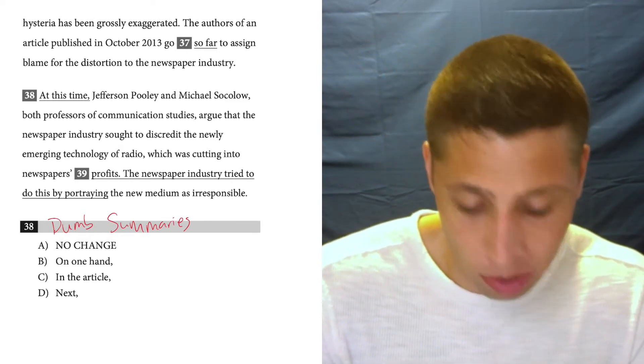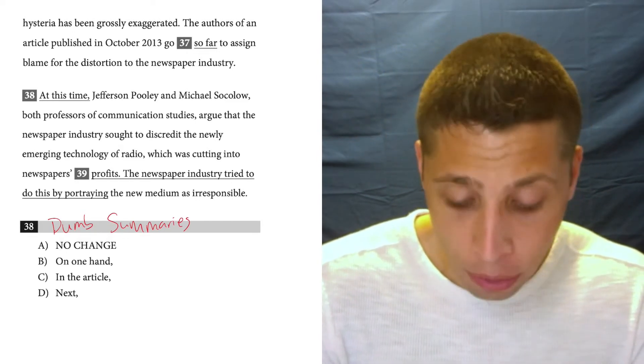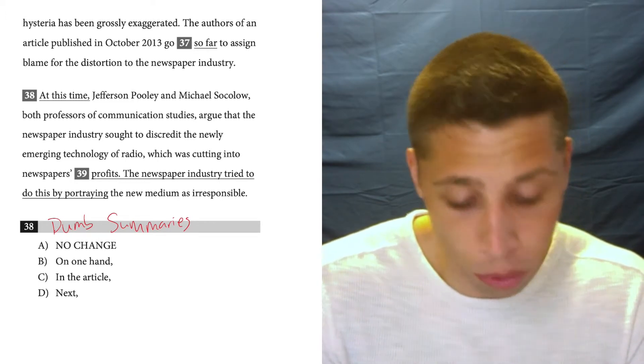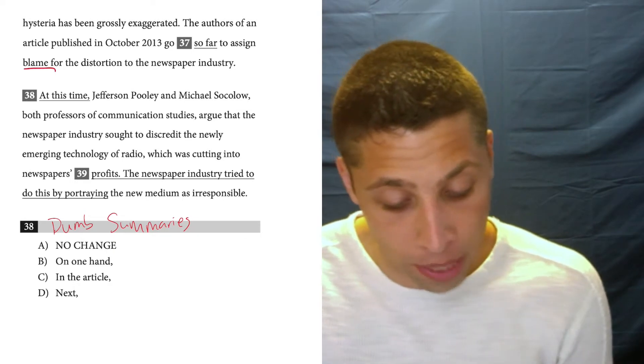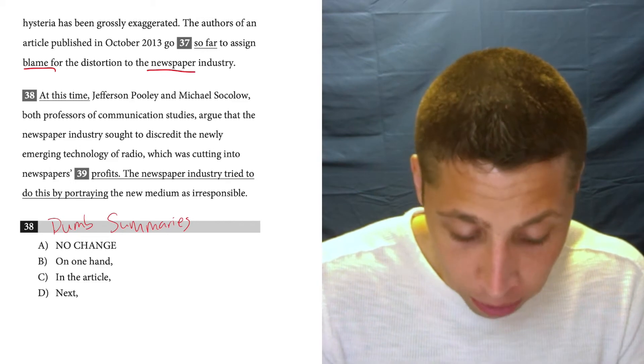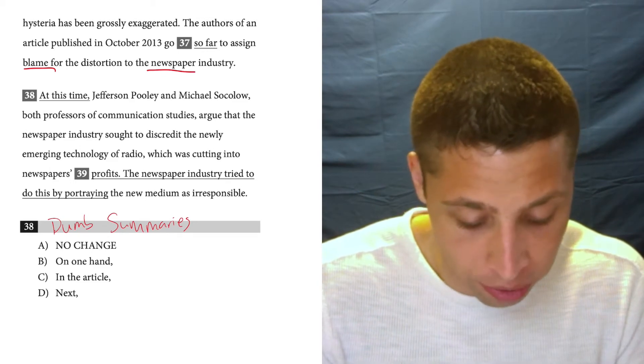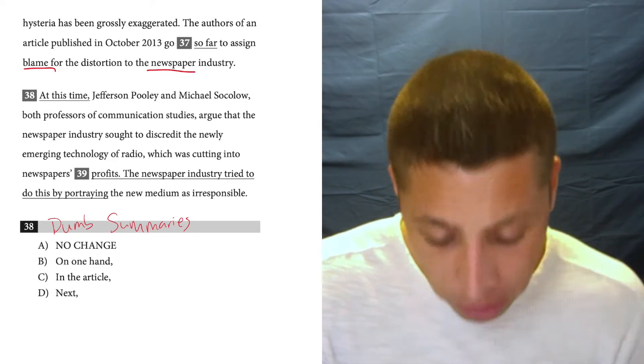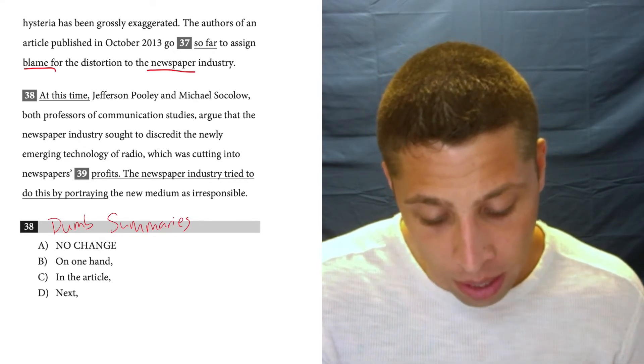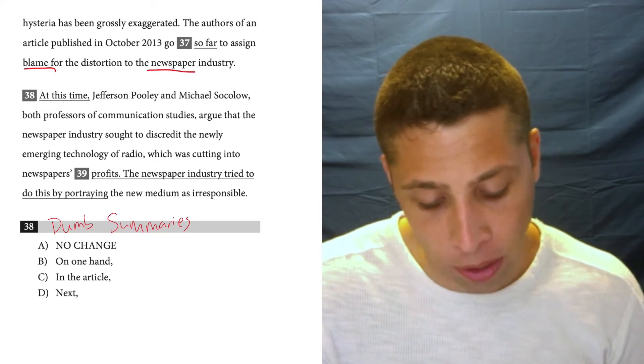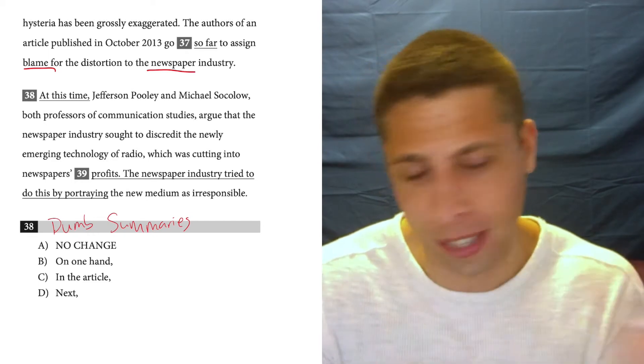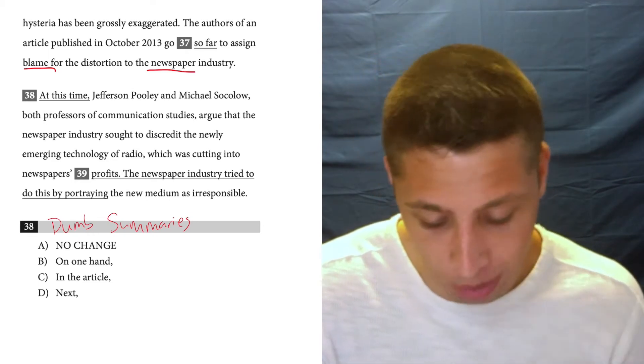So what's going on in the sentence before? The authors of an article published in 2013 go so far as to assign blame for the distortion to the newspaper industry. So they blame the newspapers. Jefferson Pooley and Michael Socolow, both professors of communication studies, argued that the newspaper industry sought to discredit the newly emerging technology of radio, which was cutting into newspapers' profits. The newspaper industry tried to do this by portraying the new medium as irresponsible. So I included a third sentence because the next question asks us to combine them. So maybe the ideas are important, couldn't hurt.